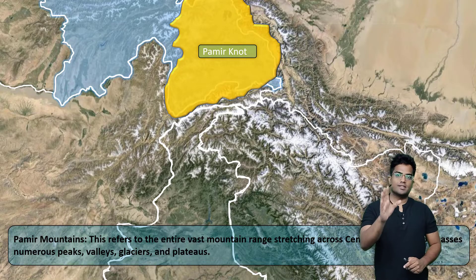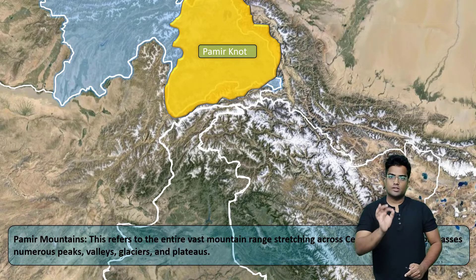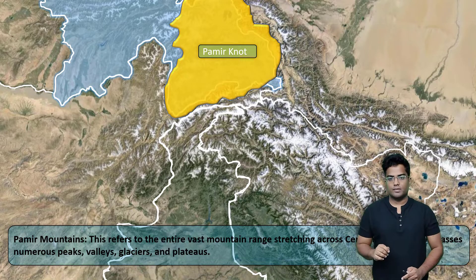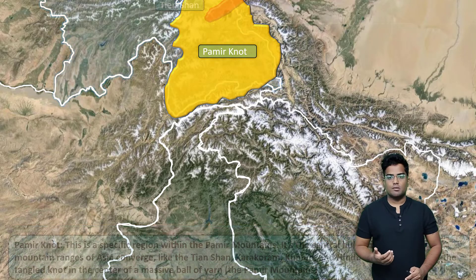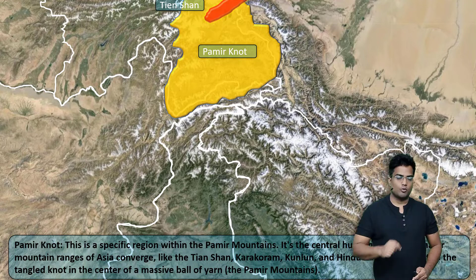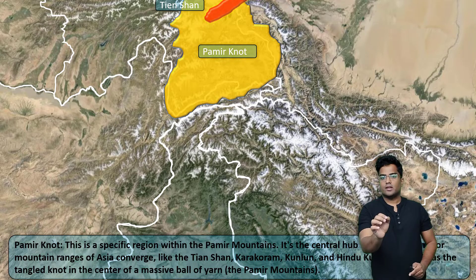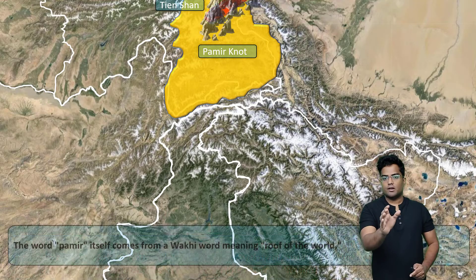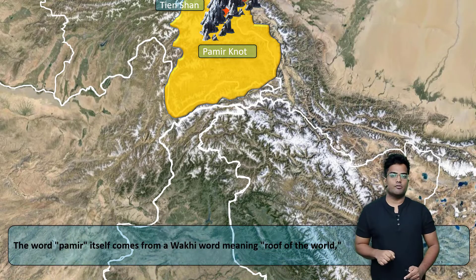We are going to discuss each of these mountain ranges in a clockwise direction, starting with the one located at the north. The first one is the Tianshan mountains — mountain ranges that run along Central Asia. As you can see, this mountain range reaches parts of Pamir.